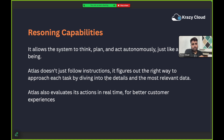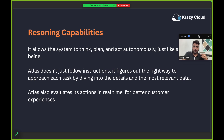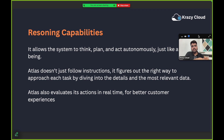The first is reasoning capabilities. It allows the system to think, plan, and act autonomously, just like a human being. Atlas does not simply follow instructions — it figures out the right way to approach each task by diving into the most relevant data. It can have millions of records from Data Cloud and automatically determine which data to pull, which action to perform, and which instruction to follow.